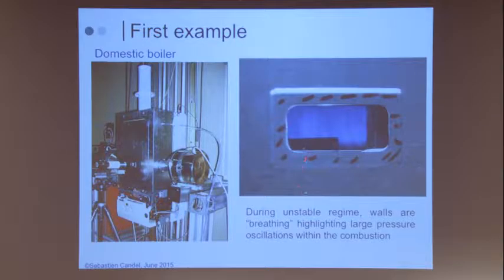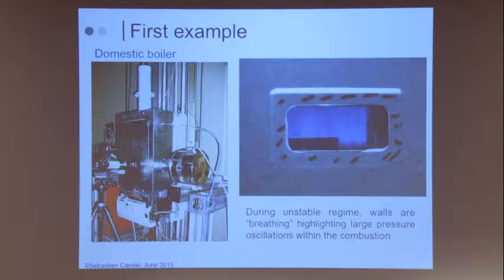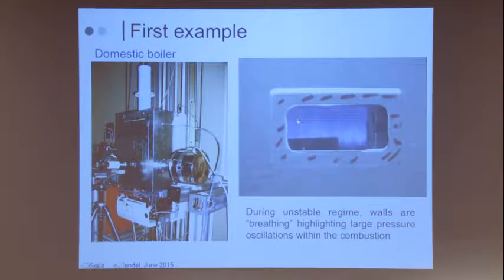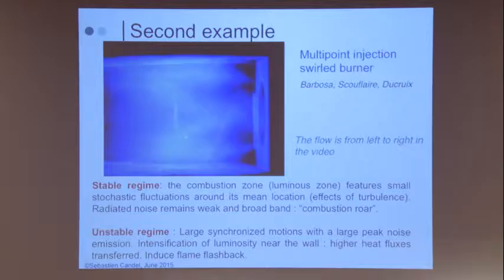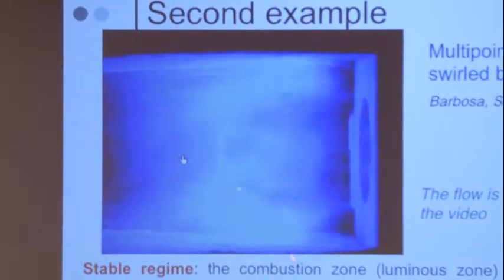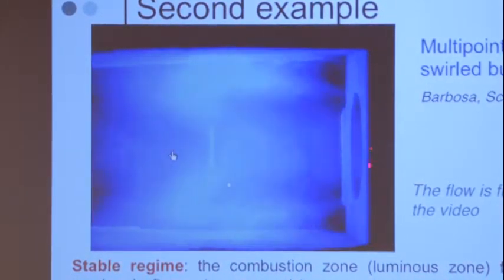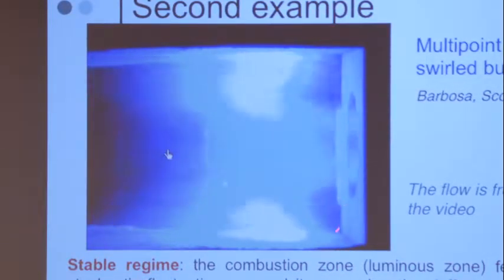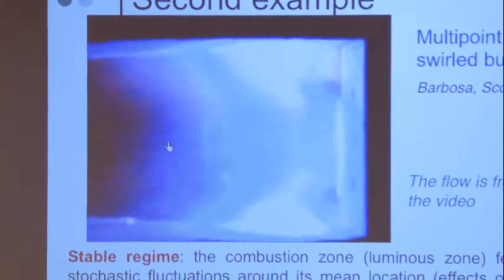You can find instabilities in various situations — for example in a domestic boiler, you have instability at low frequency involving the elasticity of the system. The flame is fluctuating but also the wall is moving. We also looked at a practical flame from a multiple point injector where by changing the staging you can become unstable.